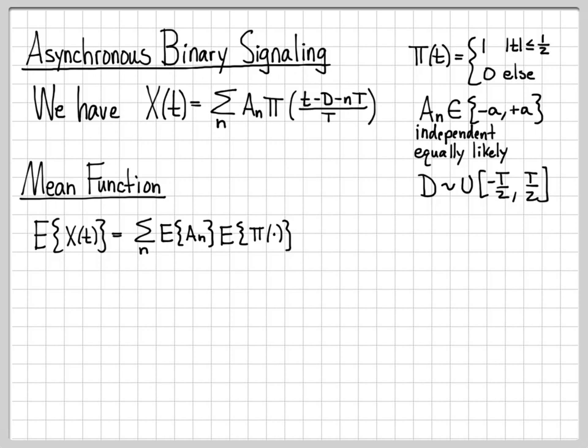And then I really have two random quantities. I have this as a random quantity and d here as a random quantity. So really, I need to take the expected value of this whole quantity.